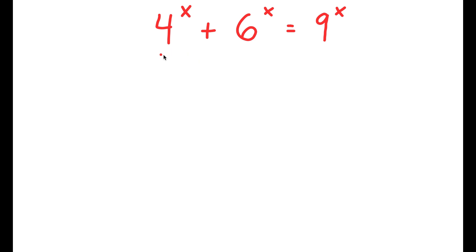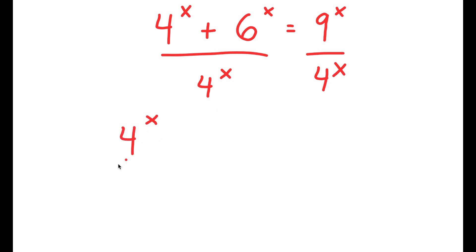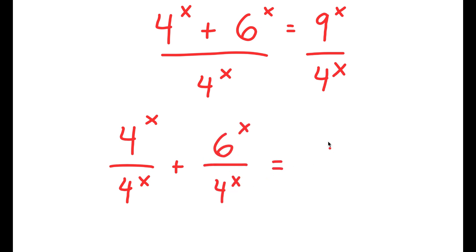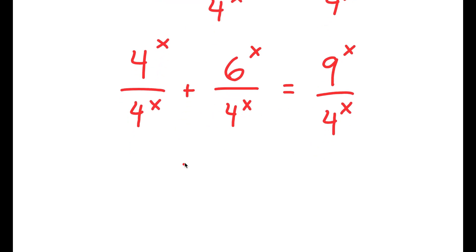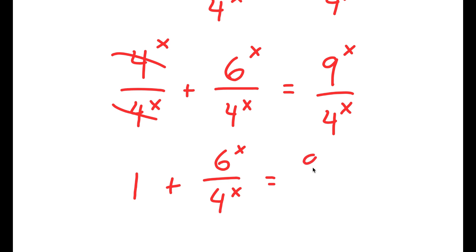To solve this, I'm going to divide both sides by 4 to the power of x. So I get 4^x over 4^x plus 6^x over 4^x equals 9^x over 4^x. Now, 4^x and 4^x cancel out, so I get 1 plus 6^x over 4^x is equal to 9^x over 4^x.